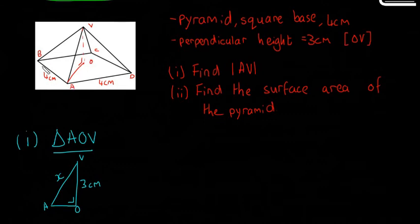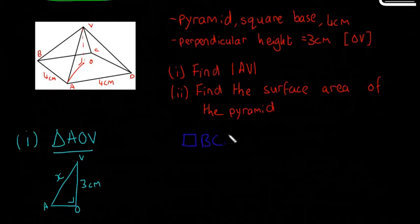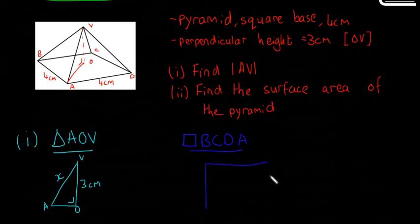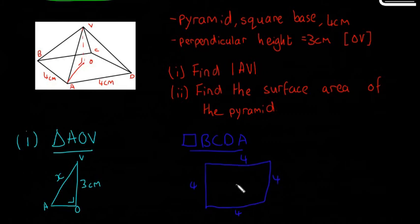The way we're going to find AO is by looking at just the square base on its own. If you look at B, C, D, A — it's a square, each side is 4. I'll draw that out as a square with points B, C, D, A, with each side labeled 4. I'll put a point O in the middle as well.